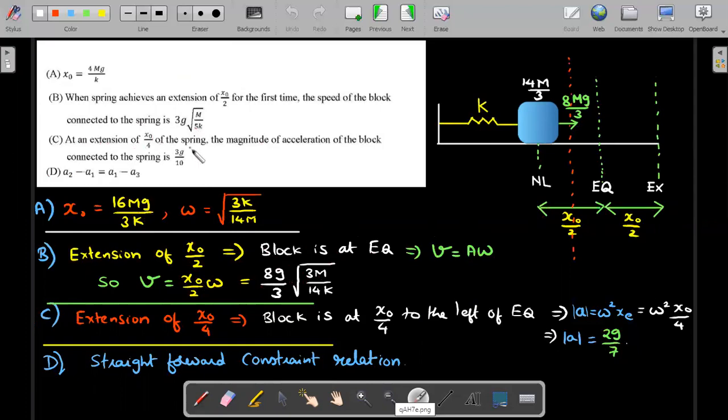Next the C option, at an extension of X₀ by 4 of the spring, the magnitude of acceleration of the block connected to the spring is 3g by 10. He has given that. Now this is another question. So extension of X₀ by 4, this red color means this block should have moved to this position, which is exactly half of this number. So I have marked that red position with the red dotted line. It would be somewhere here. So extension of X₀ by 4 fortunately also is a position of X₀ by 4 from equilibrium because our formulae are all written in terms of position from equilibrium, which also becomes X₀ by 4 coincidentally to the left of equilibrium. So magnitude of acceleration is ω² into that position and that position I substitute as X₀ by 4. Again, I nicely borrow ω². I borrow X₀ by 4 and you end up getting 2g by 7, which obviously doesn't match.